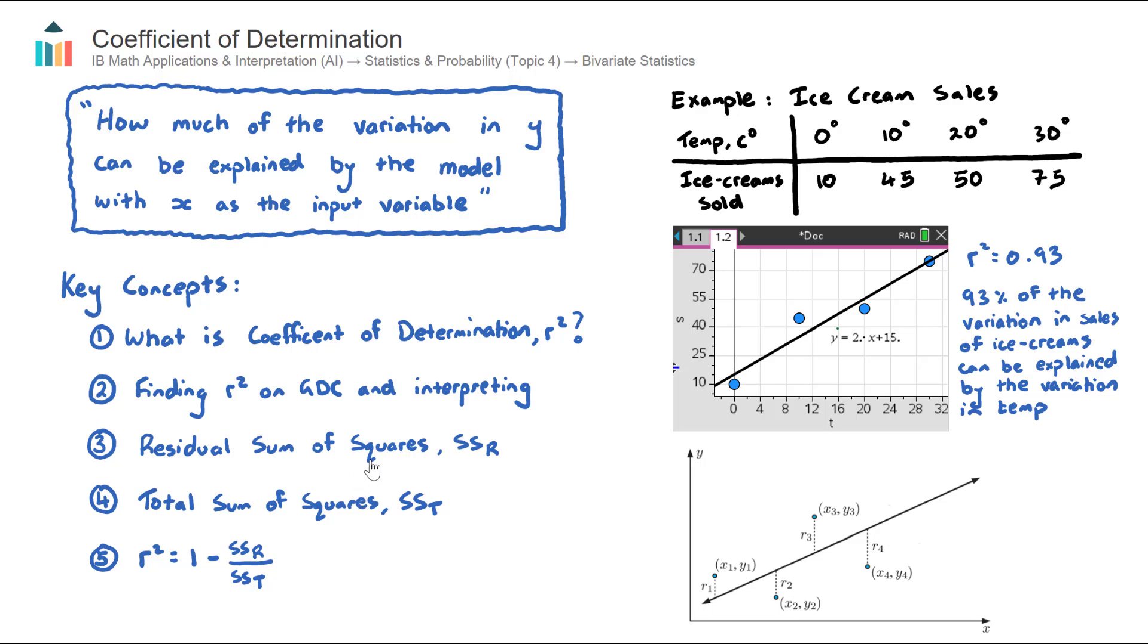Let's talk about number 3, the residual sum of squares. When your calculator gave you this line of regression equation, and up until now, you would usually be using your calculator to find the values for M and for C and then looking at the R value, but we haven't really thought through, well, how does the calculator actually give us this best line of best fit? Well, the way that the calculator does it is by minimizing what's called the residual sum of squares.